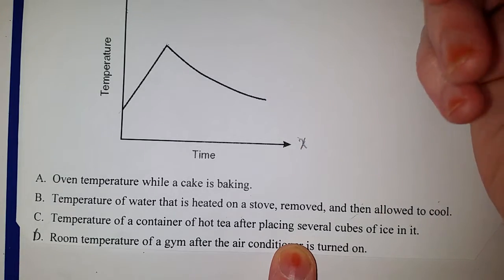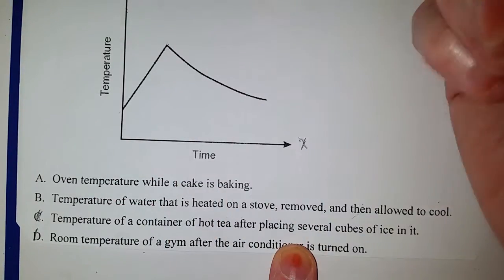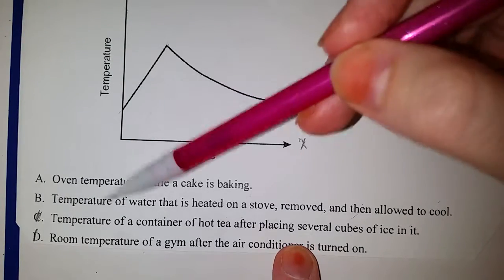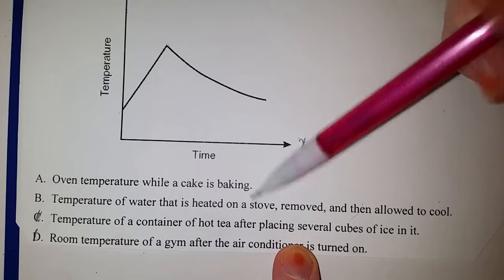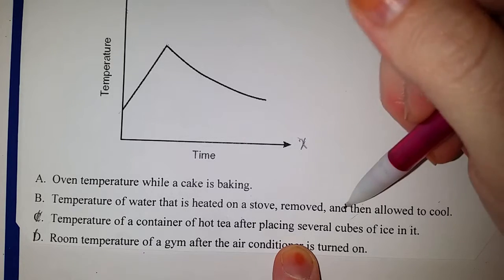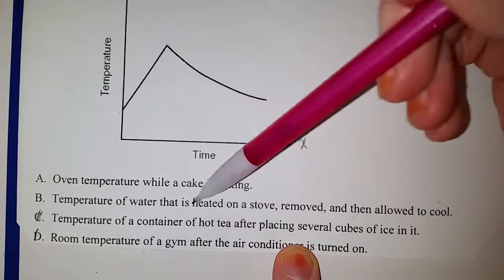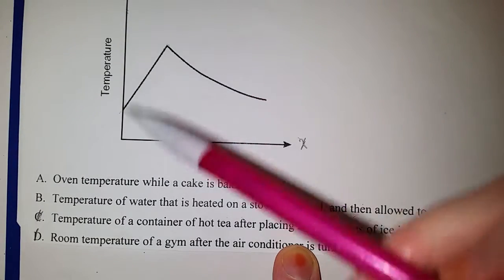So it's between A and B. Well, let's look at B. B says the temperature of water that is heated on the stove, removed, and then allowed to cool. So that means in the first part, temperature of water that is heated on the stove, that means we are increasing the temperature of water on the stove.